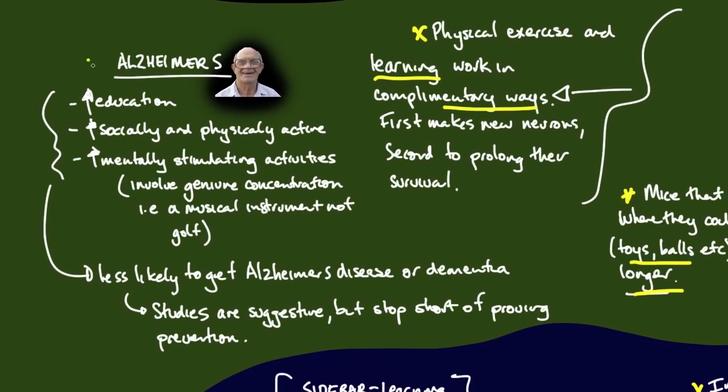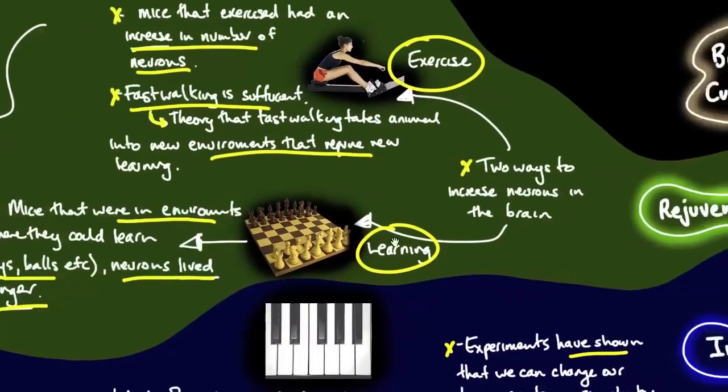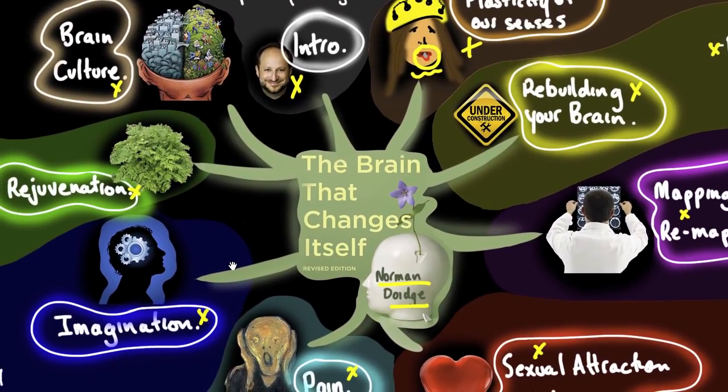A side point here is Alzheimer's and dementia and what you can do to potentially avoid it. They have found that subjects with more education that are socially and physically active and that engage in constant mentally stimulating activities, activities that involve genuine concentration like a musical instrument, not so much golf, can actually lead to being less likely to get Alzheimer's disease or dementia. The studies stop short of proving prevention, but these activities are certainly not harmful and some are showing they assist in avoiding getting Alzheimer's.